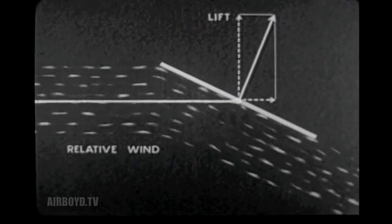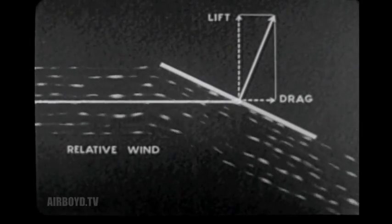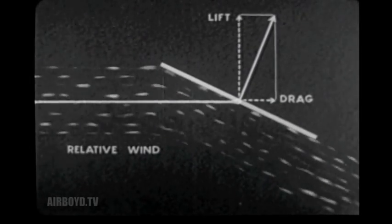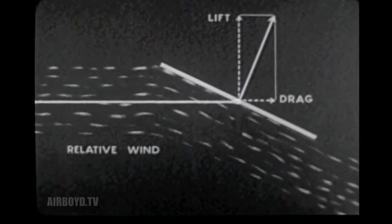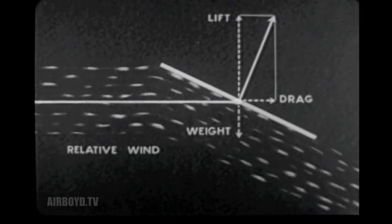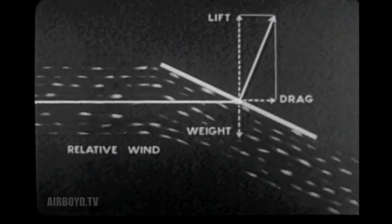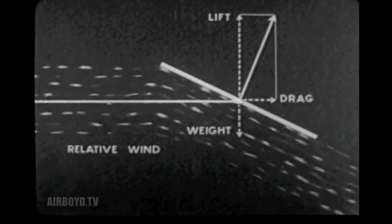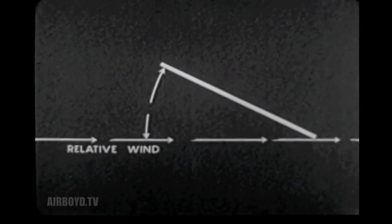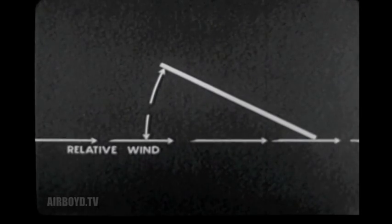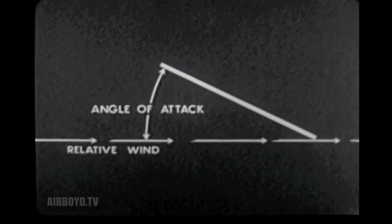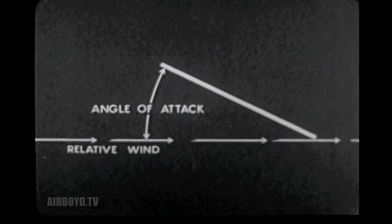Lift acts at right angles to the relative wind and drag acts parallel to the relative wind. If the plate is held in a horizontal airstream in this manner, lift is opposed by the weight of the plate and drag is opposed by the tension on the cord. The acute angle between the relative wind and the face of the plate is called the angle of attack. This angle may have any value from zero to 90 degrees and may be either positive or negative.